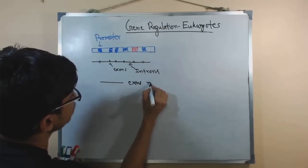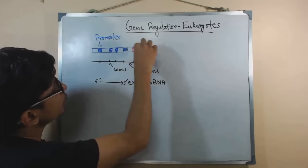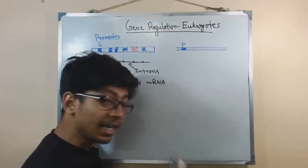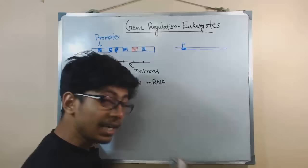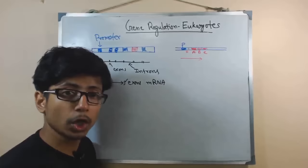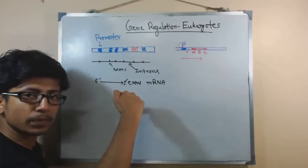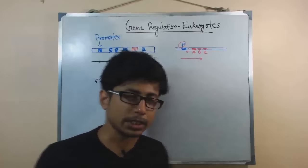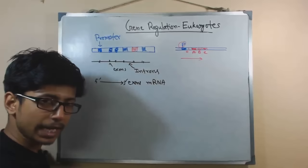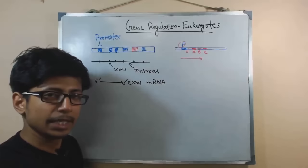After splicing, we have all those exons joined together and that is called the mature mRNA. In prokaryotes, we have one promoter that can control the expression of multiple genes — gene A, gene B, gene C — all under the control of a single promoter in a cascade. But in eukaryotes, a single gene has its own dedicated promoter. So gene A has its own promoter, gene B has another promoter, and gene C has yet another promoter. That is the first structural difference.